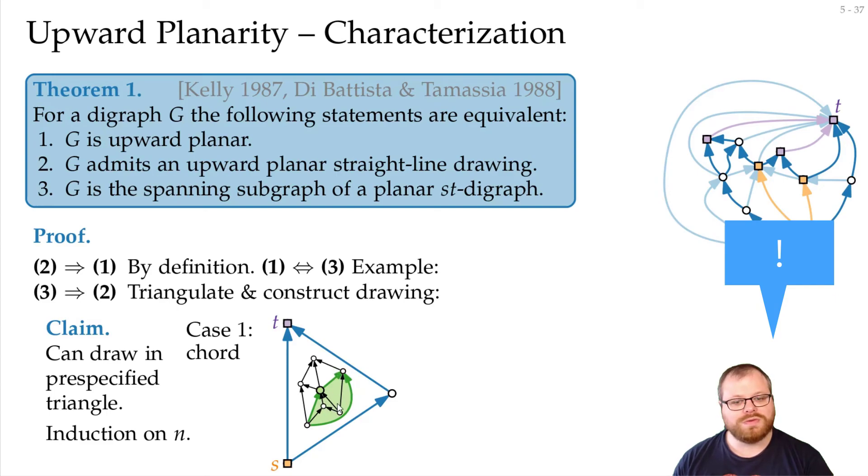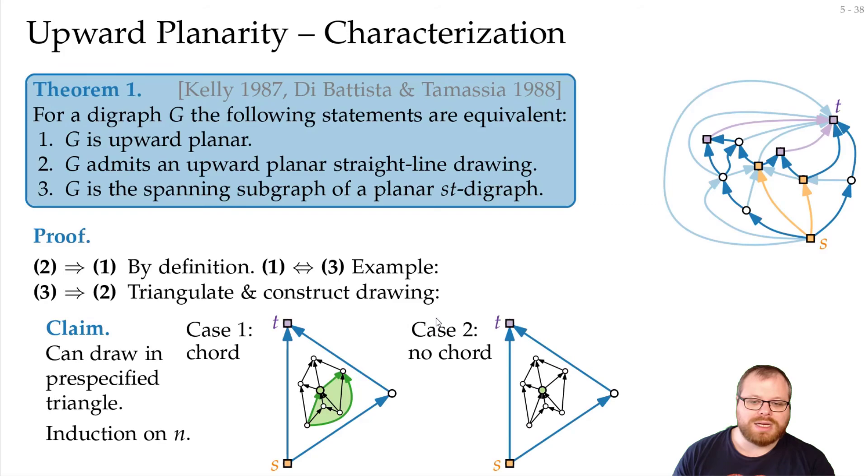And then, we remove all the interior vertices, we take the large graph. This again has fewer vertices, so we can draw it in a specified triangle. And then, we only have to plug these two drawings together, and we get a drawing of the whole graph.